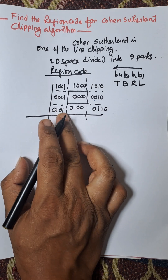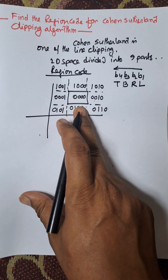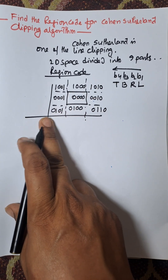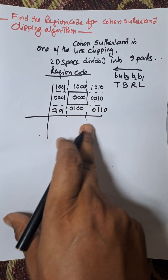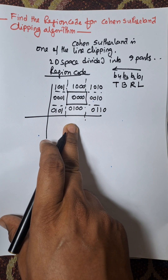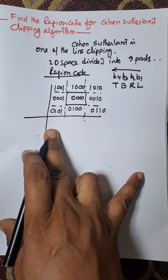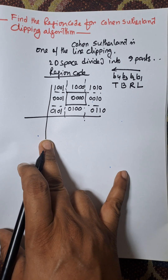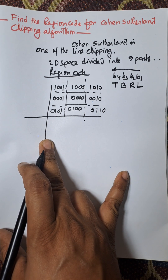In this way, we will find all region codes for the Cohen-Sutherland line algorithm. Thank you very much for watching this video. Please subscribe. Thank you.